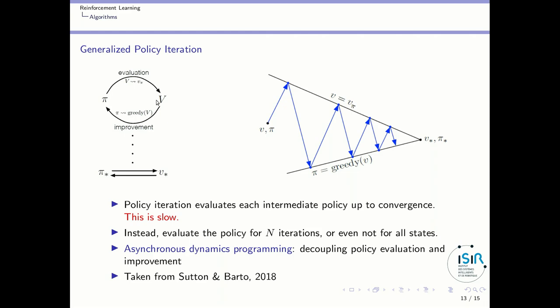We have one process that evaluates the policy and one process that improves the policy, and those two processes don't need to be synchronized. What this diagram shows is that here you move towards better evaluating the policy, and here you move towards improving the policy, and any path between those two will converge finally to the optimal value and the optimal policy.